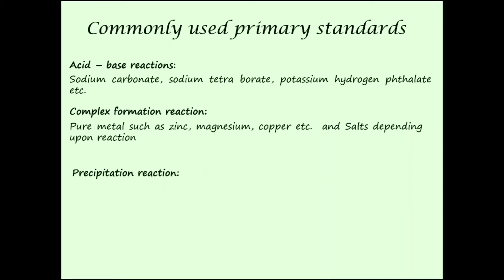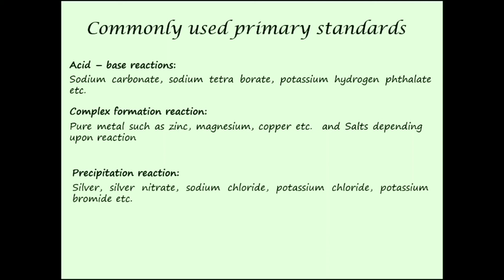Next, precipitation reactions — the titrimetric analysis based on this is precipitation titration. In precipitation titration, silver, silver nitrate, sodium chloride, potassium chloride, potassium bromide, etc. are used as primary standards.